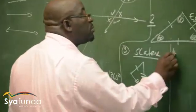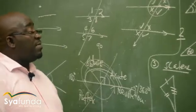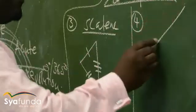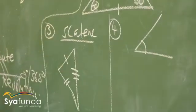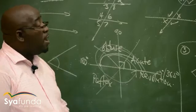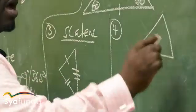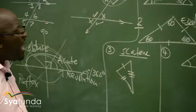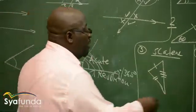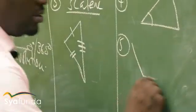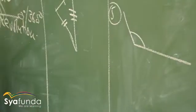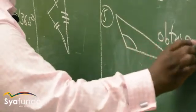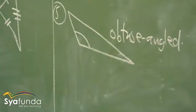The next three types of triangles are named according to their angles. Number four is the acute angled triangle — one of its angles is an acute angle. Number five is the obtuse angled triangle — one of its angles must be an obtuse angle.